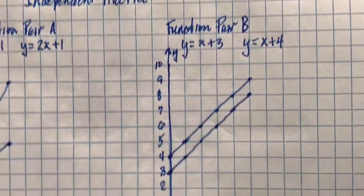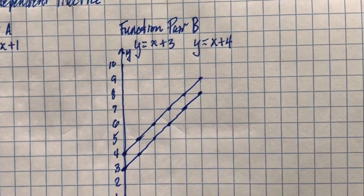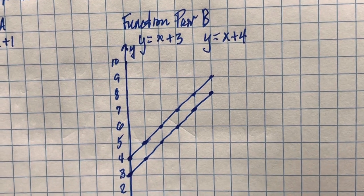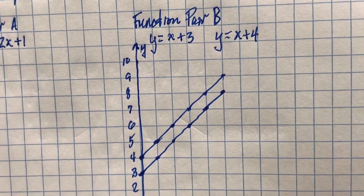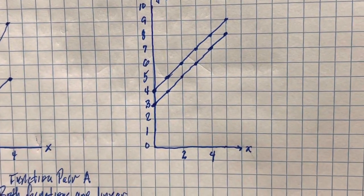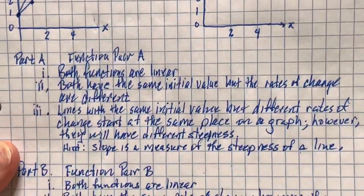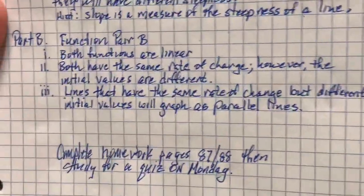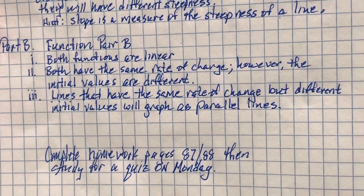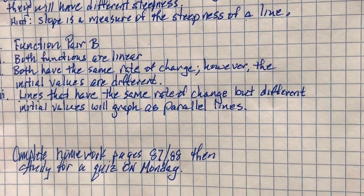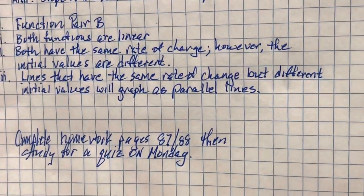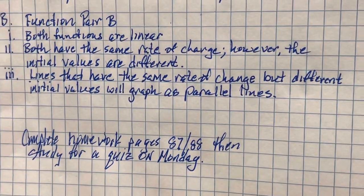For function pair B, we have y = x + 3 and y = x + 4. Both independent variables have the hidden coefficient of 1, so the rate of change for both is 1. They have a different starting point. For function pair B: both functions are linear, both have the same rate of change, but the initial values are different. Lines with the same rate of change but different initial values graph as parallel lines — they are straight lines and functions, but they will never meet.